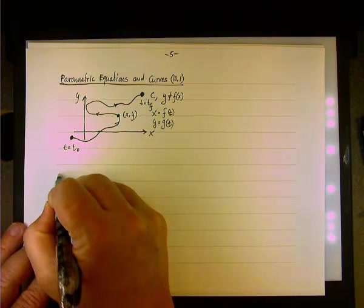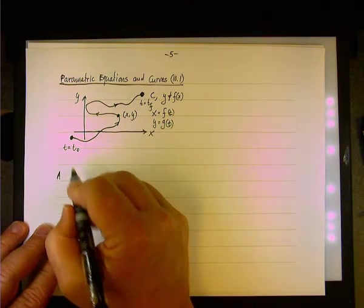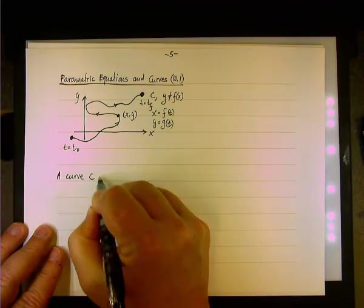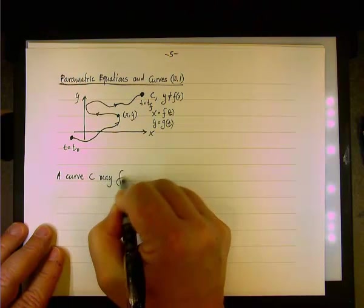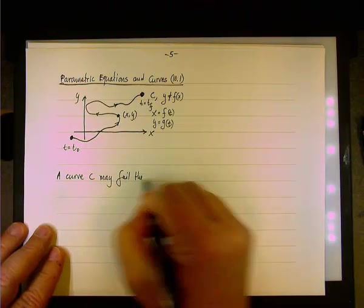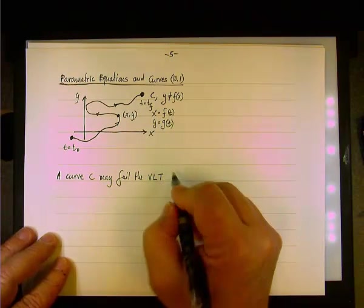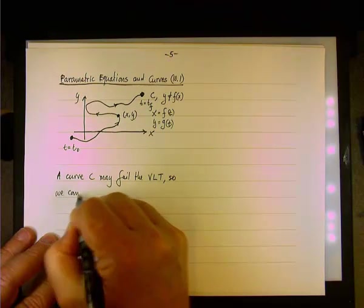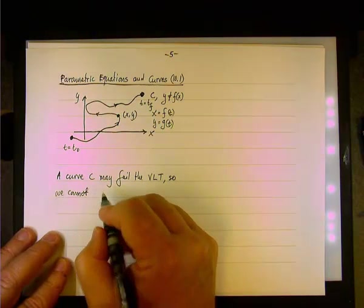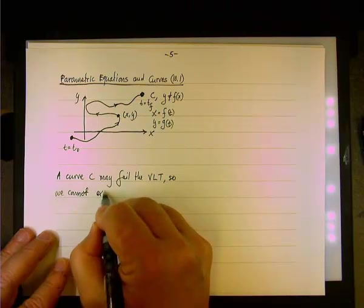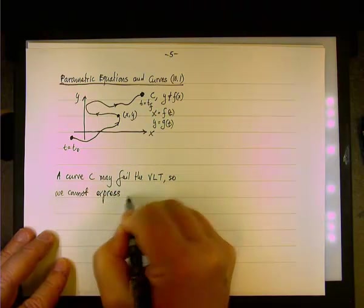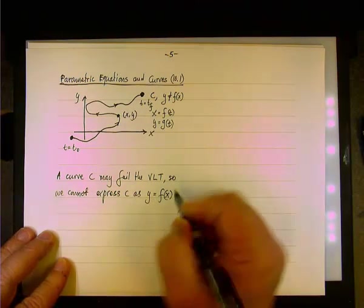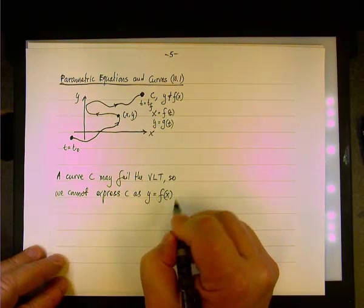Okay, so let's have a little description here. Let's write basically this story. We're going to say that the curve C may fail the vertical line test. So we cannot express C in terms of y equal f of x.